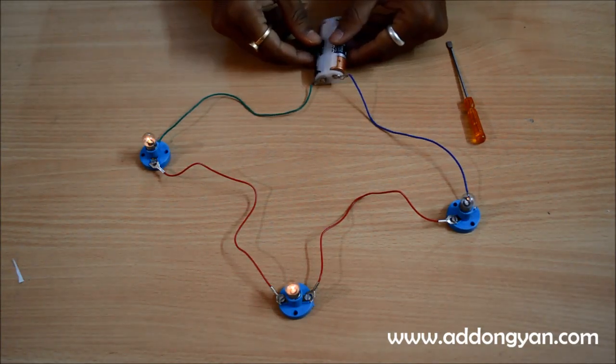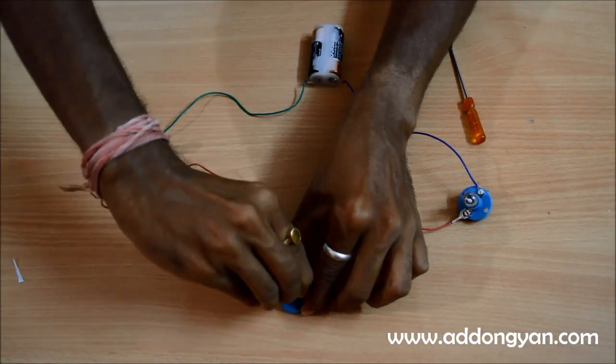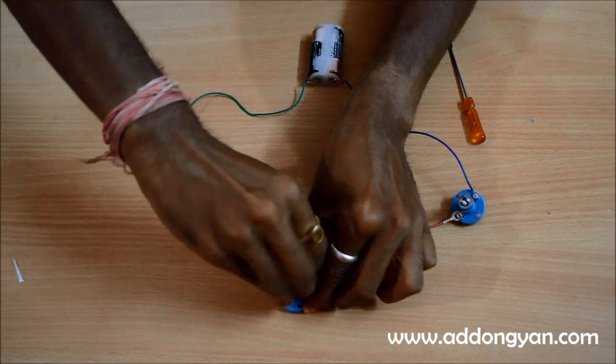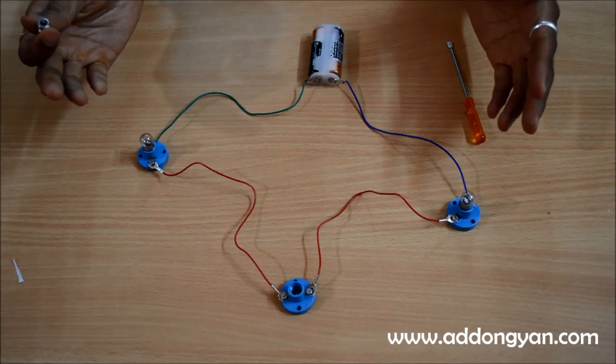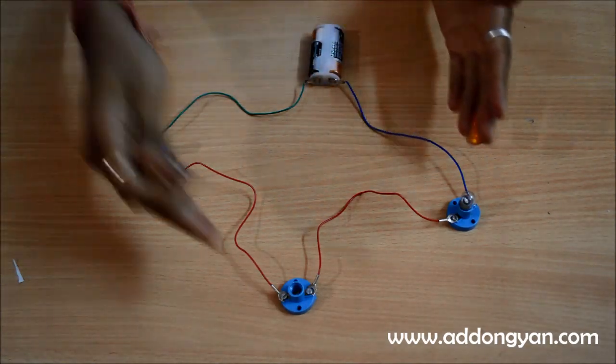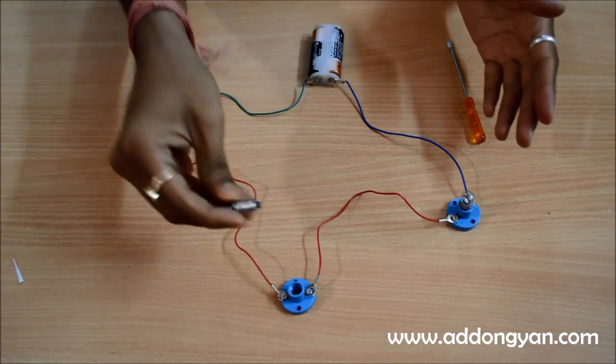Now in case if I remove this particular bulb, all the bulbs stop glowing. You see? So in a series circuit if it is disconnected at any point which I did so by removing this bulb it stops working.